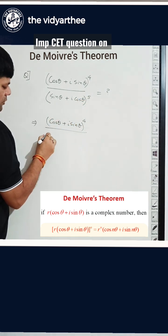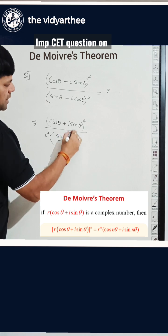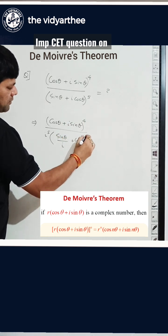Now here I take i outside. When you take i outside, it comes with the power 5. It becomes sine theta upon i and this becomes cos theta. Right. Power 5.